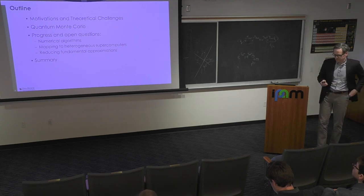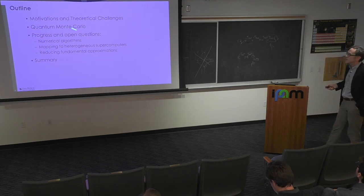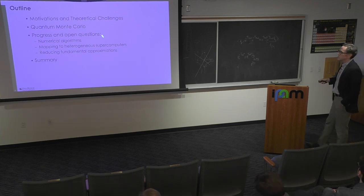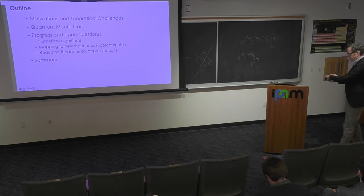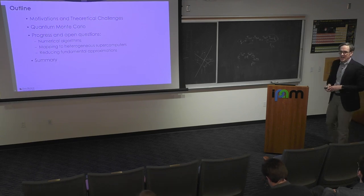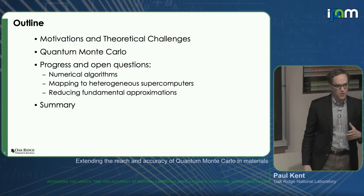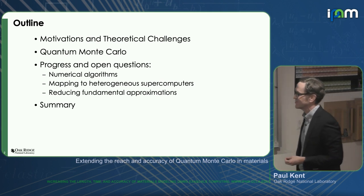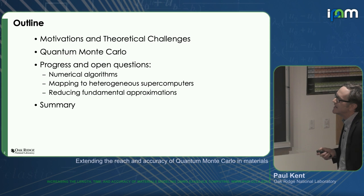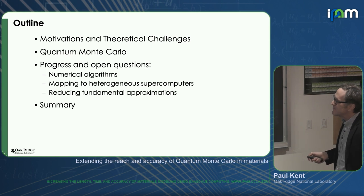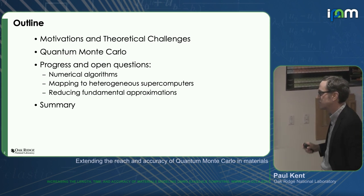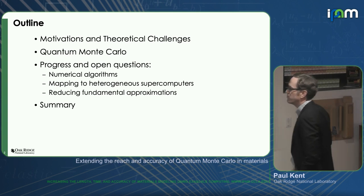Outlining this talk is really very simple. I'm going to talk about some of the motivations for our work — why we're going to go through all this trouble — touch on quantum Monte Carlo at a very high level. I have slides for days so if you're interested in more details we can talk in the rest of the workshop and questions at the end. The main core of this talk is going to be on three areas where we've made some progress, and I'm also going to point out some open questions.